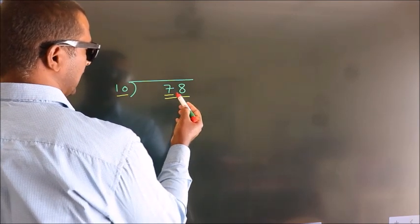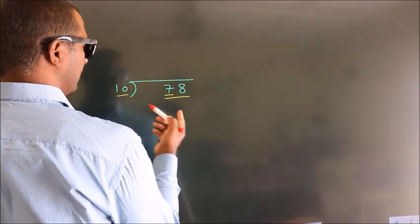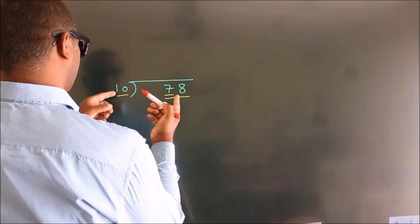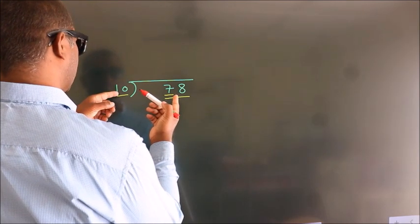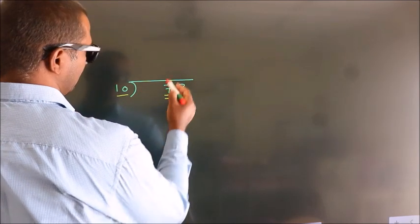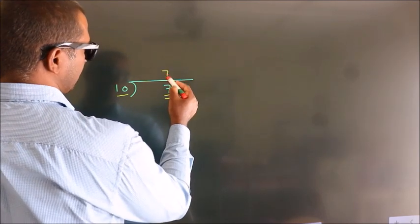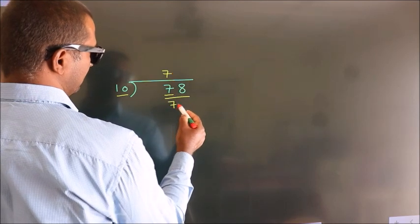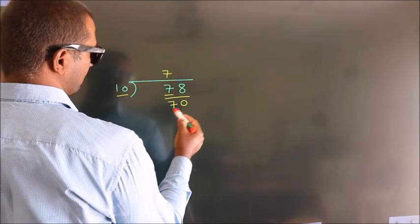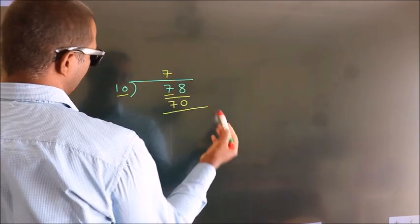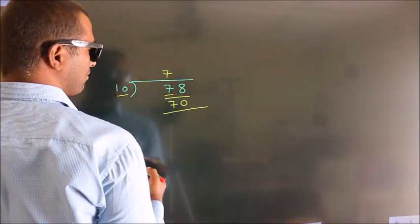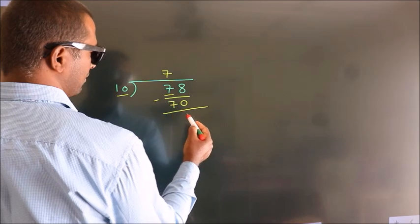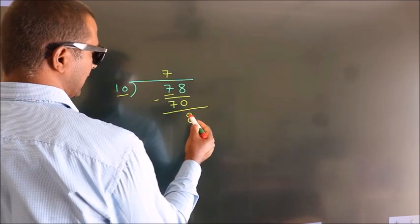We take 78. A number close to 78 in the 10 times table is 10 sevens, which is 70. Now we subtract and we get 8.